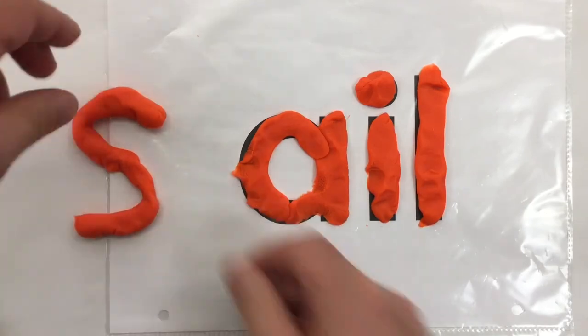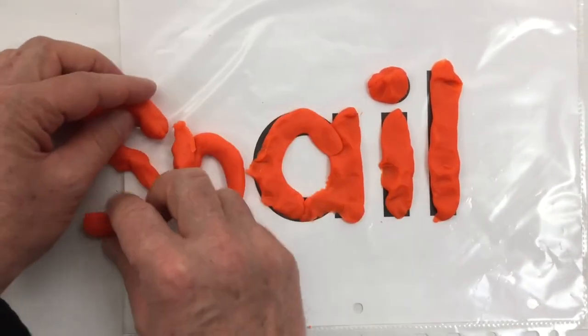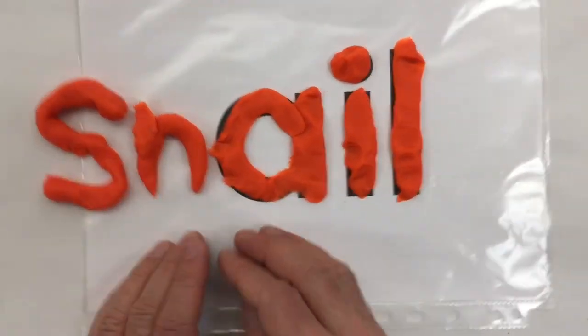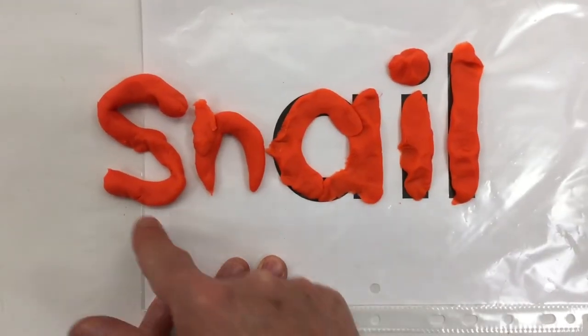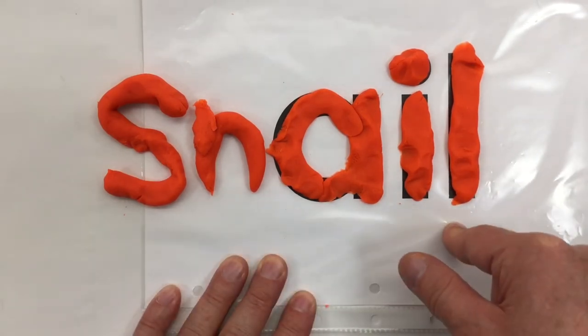If we were to move the letter S over and stick an N in there, then I've got the word 'snail'—a snail, a garden snail.